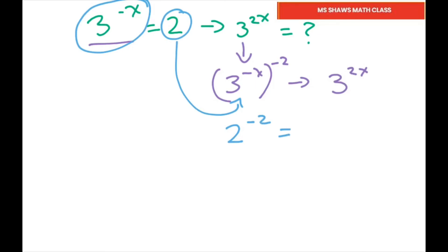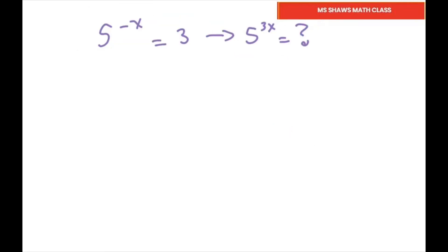So I can substitute the 2 in there. I have 2 to the negative 2, that equals 1 over 2 squared, which equals 1 divided by 4. And the last one is very similar. I want a 5 to the negative x because I know that is 3.